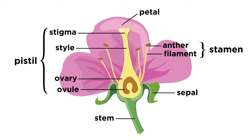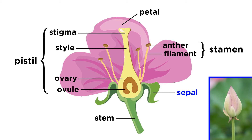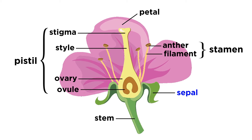We went over flower structure in a previous tutorial, but let's briefly review. The small green leaf-like structures between the flower and the stem are called sepals. The sepals cover the flower and protect it when it's still a bud before it blooms, and after a flower opens, the sepals help provide the flower with structure and stability.